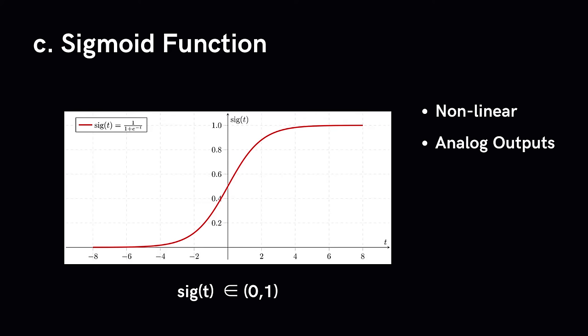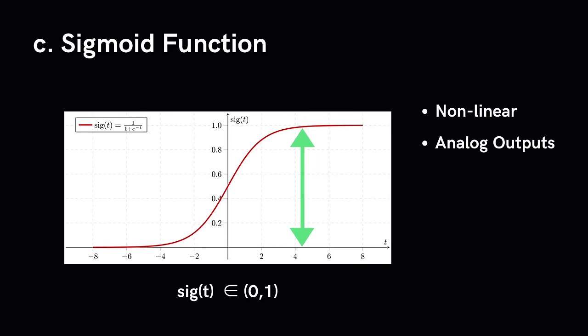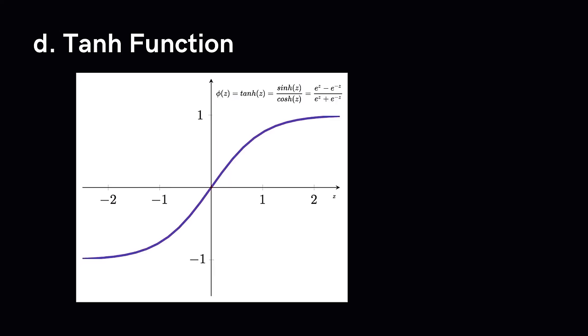However, sigmoid functions have disadvantages. Between x = −2 and x = 2, y values are very steep — small changes in x cause large changes in y. Towards either end, y values respond very little to changes in x, and the gradient becomes almost 0. This gives rise to the vanishing gradient problem: if the input is either very large or very small, the sigmoid squishes it to a value between 0 and 1 and the gradient becomes tiny — a huge problem for gradient descent.